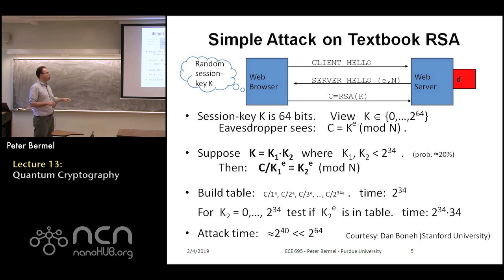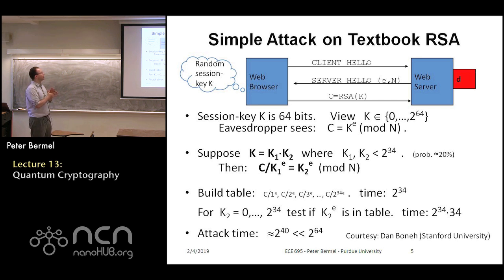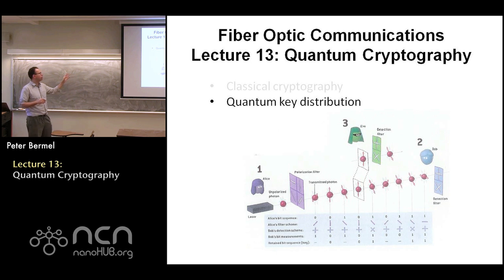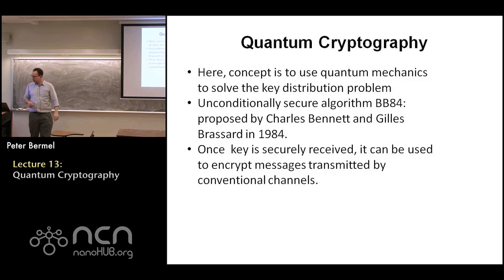Obviously, if you want to guarantee with a higher probability it takes slightly longer. But the key point is that there are very easy ways to attack textbook RSA. All of this is just to convince you that we can't necessarily expect to be completely secure with current approaches. And so that actually leads me to the core point of today, which is to talk about quantum key distribution — why is this important?